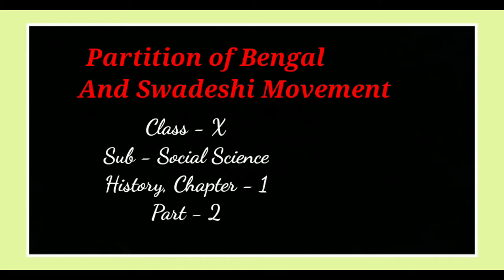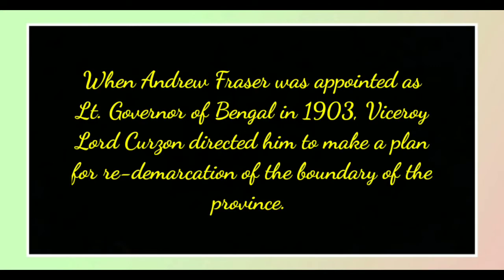Hello, dear students. Today in this video I am going to explain about Class 10 Social Science, History Chapter 1, Part 2. The topic is the Partition of Bengal. When Andrew Fraser was appointed as Lieutenant Governor of Bengal in 1903, Viceroy Lord Curzon directed him to make a plan for redemarcation of the boundary of the province.